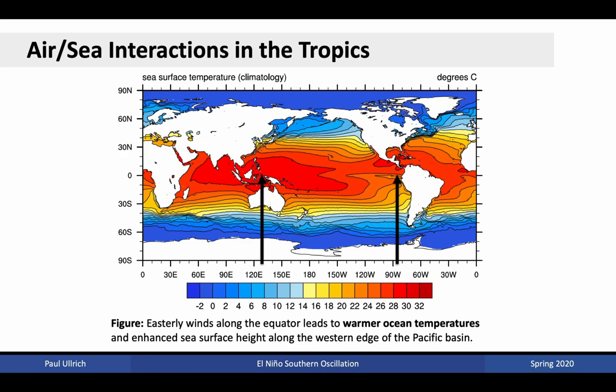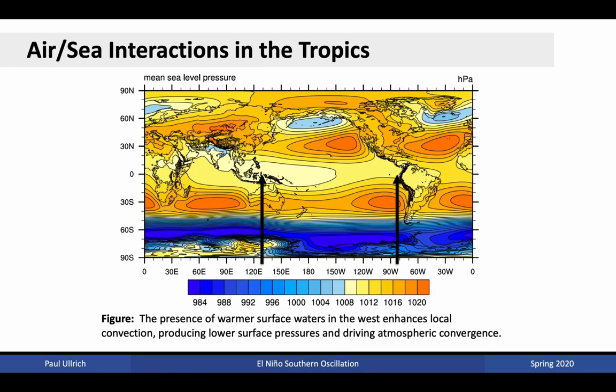The easterly flow that dominates the tropics pushes water from the east to the west. In the west, we get an accumulation of warmer near-surface waters that have been warmed through radiation. In the east, we get cooler temperatures because upwelling brings colder fluid from depth to the surface. Because of the presence of warmer temperatures in the western Pacific, it also has a propensity towards the generation of convection, which then vacates air mass in the near surface, leading to lower pressures overall. So what we generally see is lower pressures in the western Pacific and higher pressures in the eastern Pacific.